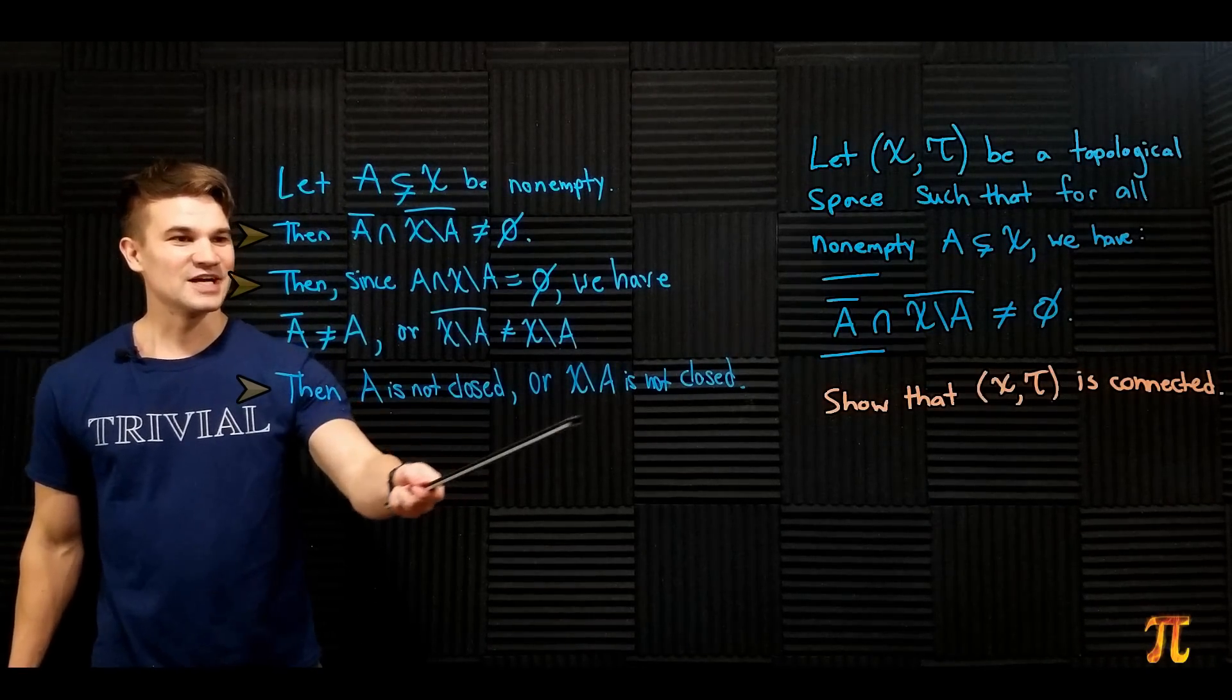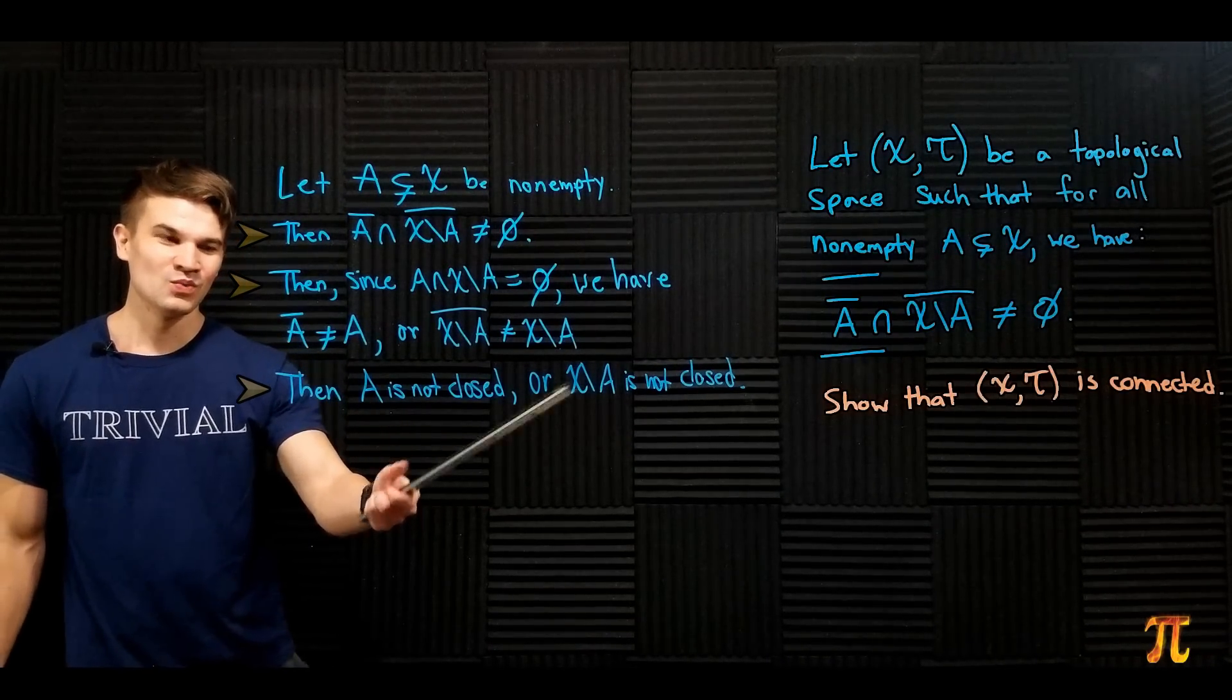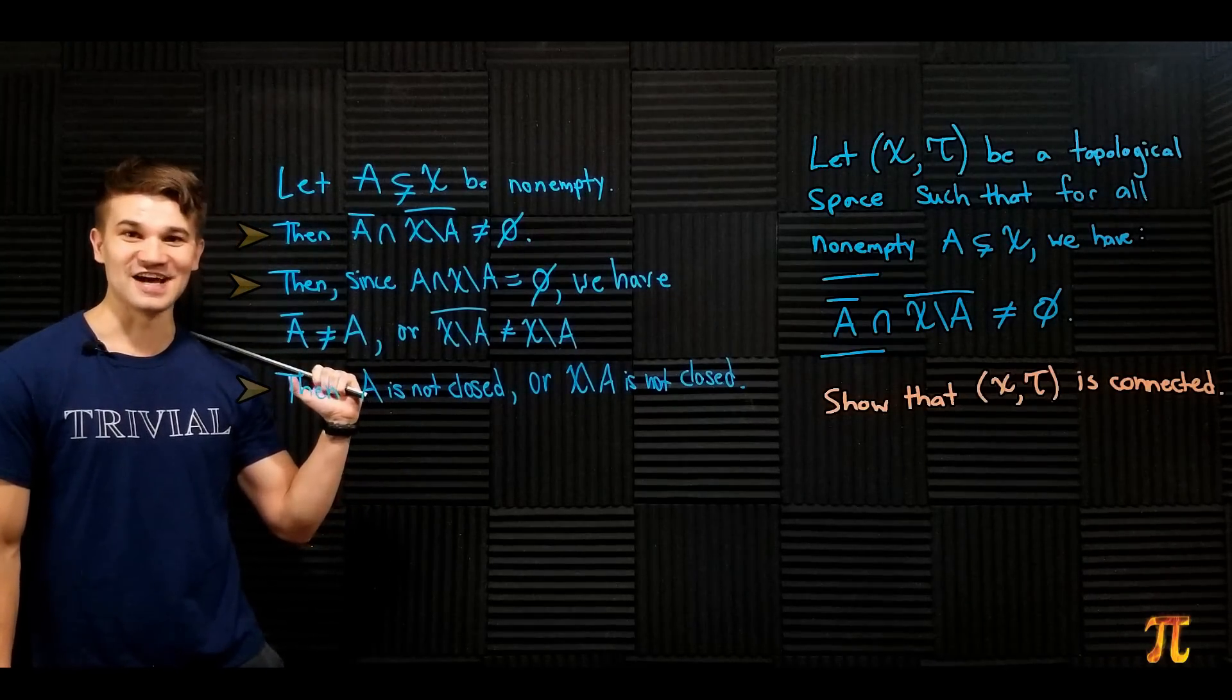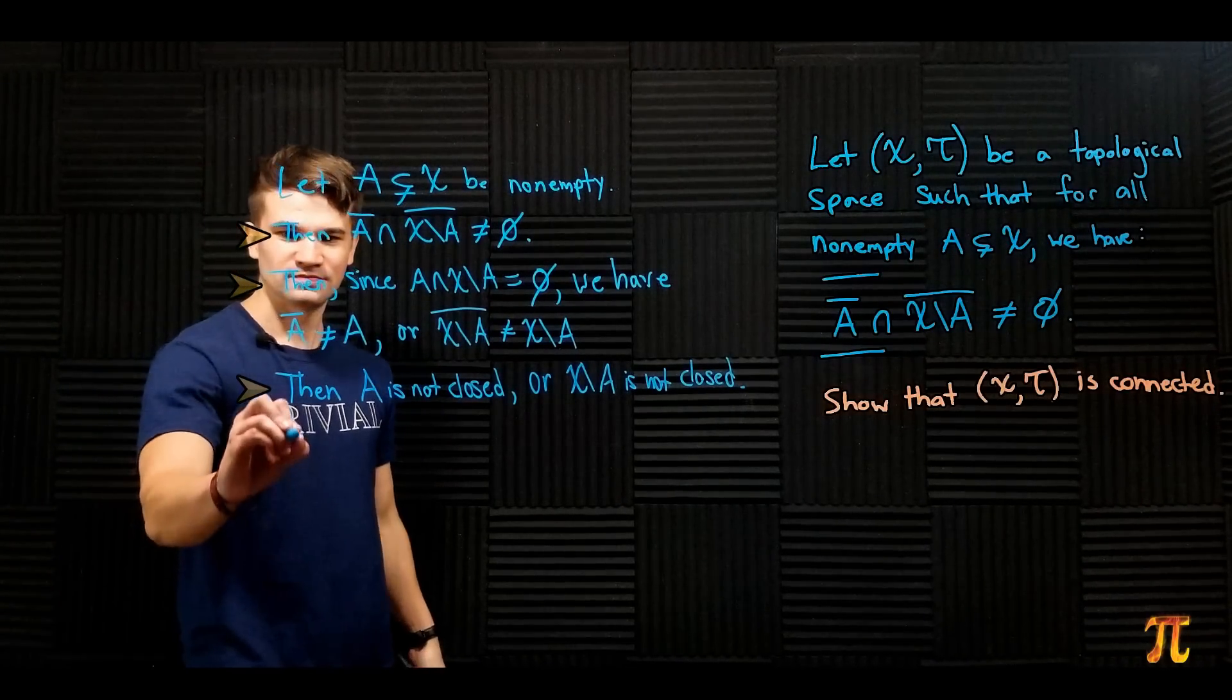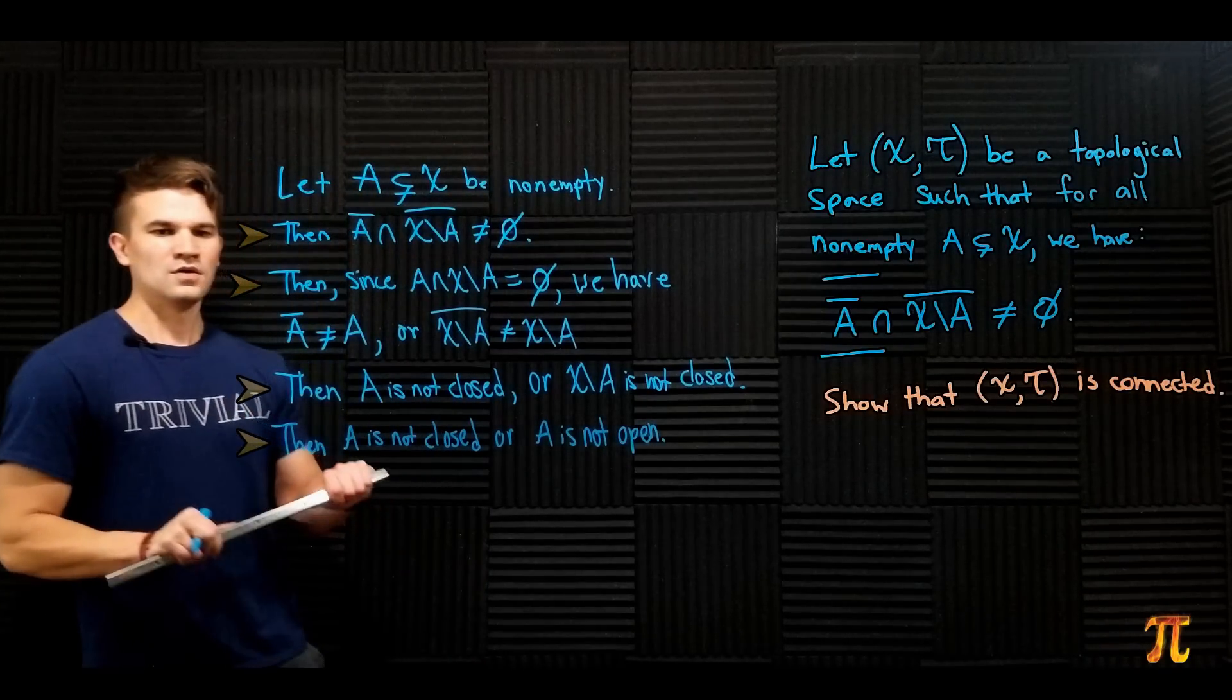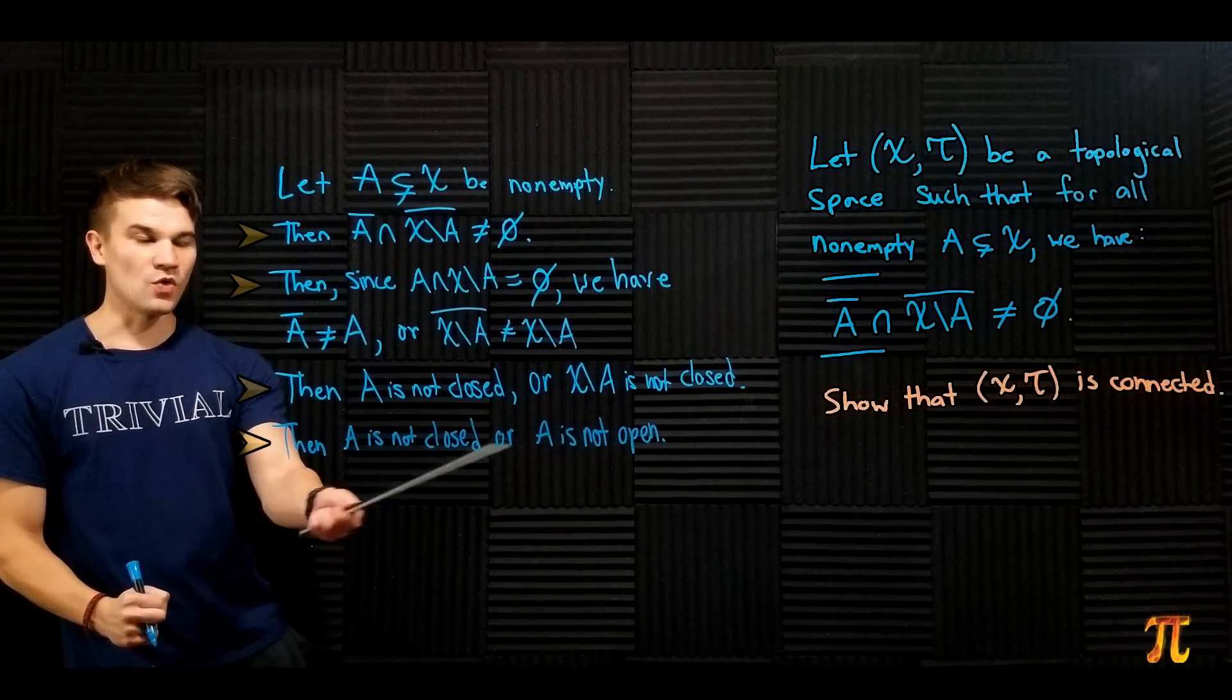Another way to say that is that A is not open. So if A is not closed or A is not open, in other words, it can't be both closed and open - A is not clopen.